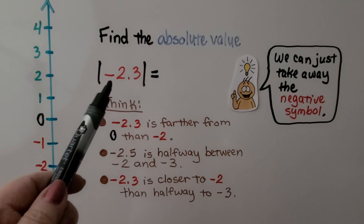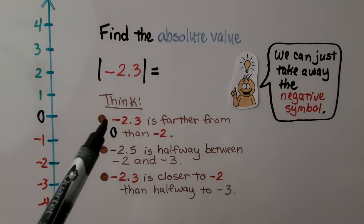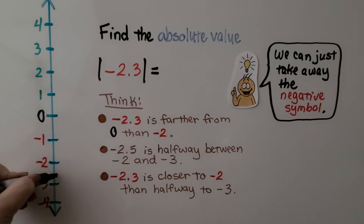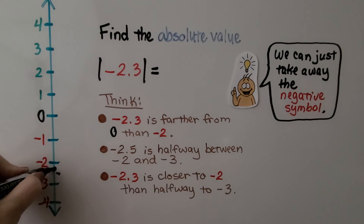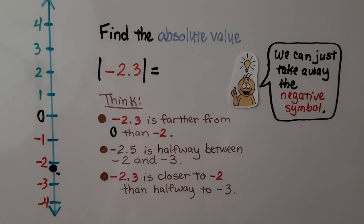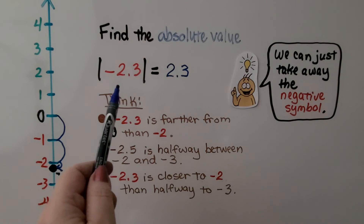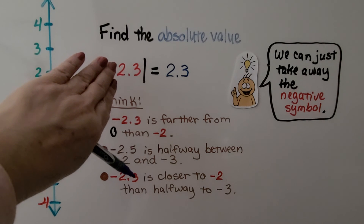Here it's telling us to find the absolute value of negative two and three-tenths. Negative two and three-tenths is farther from zero than negative two. Two and a half is halfway between negative two and negative three, so negative two and three-tenths is closer to negative two than that halfway point — about right here. Counting the jumps: one, two, and then three-tenths. So its absolute value is two and three-tenths. We can actually just take away the negative symbol — the absolute value of negative two and three-tenths is two and three-tenths.